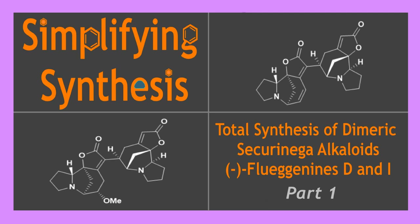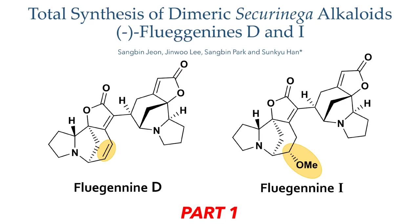Welcome to Simplifying Synthesis, the channel where we look at complex organic chemistry and explain how it works. Today we are going to look at the total synthesis of Dimeric Securonega alkaloids, Pfluganins D and I. This work was carried out by the Han Group at the Korea Advanced Institute of Science and Technology. The Securonega alkaloids have been isolated from plants from several different genera, most notably Pflugia, which gives its name to these compounds and have been the targets of total synthesis for over six decades.